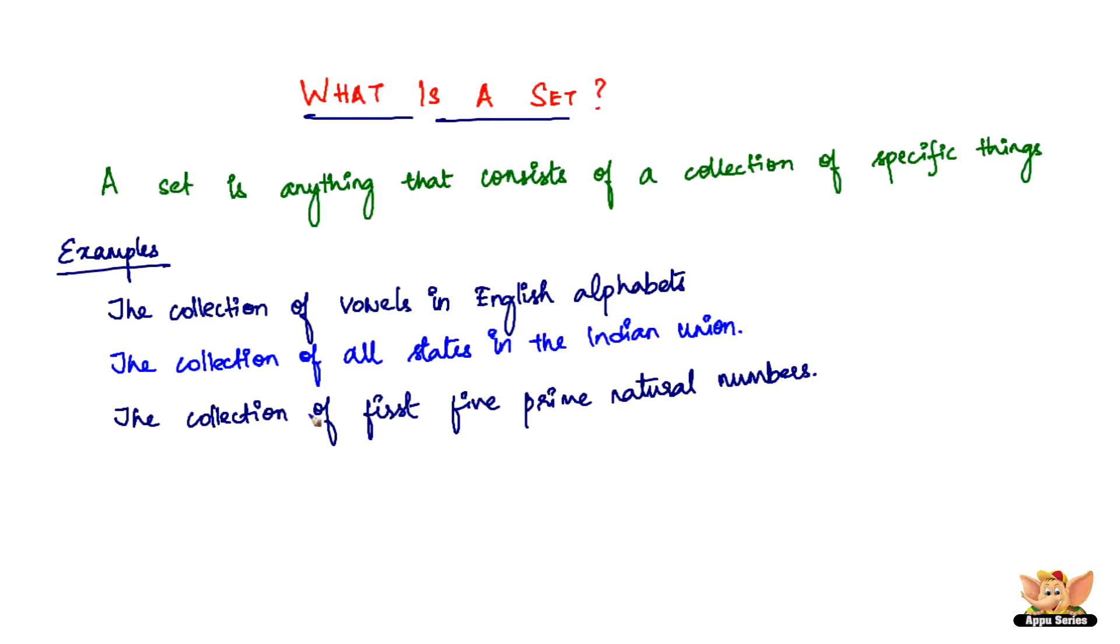So, while these can be good examples of what is a set, I will also give you a couple of examples for what cannot be a set to give you a clear understanding of what is a set. Here we have an example of what cannot be a set. A collection of good hockey players in India.